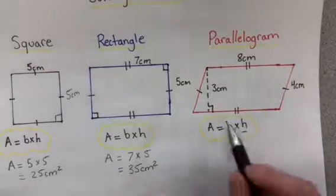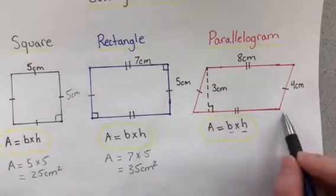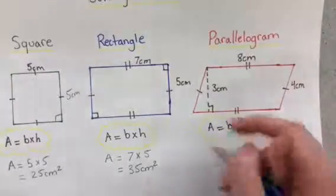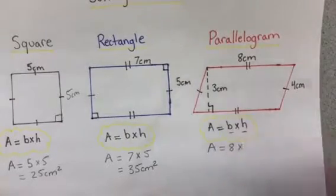Let's look at the base first. The base is still the bottom of the shape. In a parallelogram, opposite sides are equal, so the base is 8 centimeters times our height.